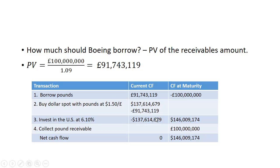They invest that money in the US at an interest rate of 6.1%. So $137,614,679 times 1.061 gives the amount they'll receive at the end of the period. They collect their pound receivable and use that to pay off the British loan. Their net cash flow is $146,009,174. Regardless of what happens to the exchange rate, this is what they'll get — they've locked in what they're receiving.